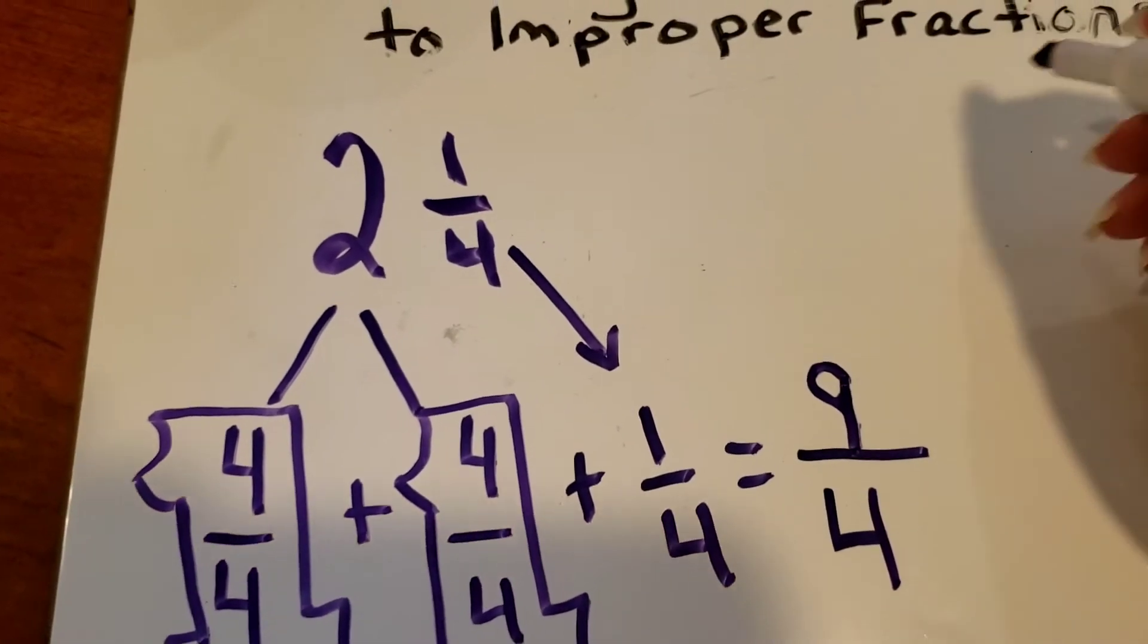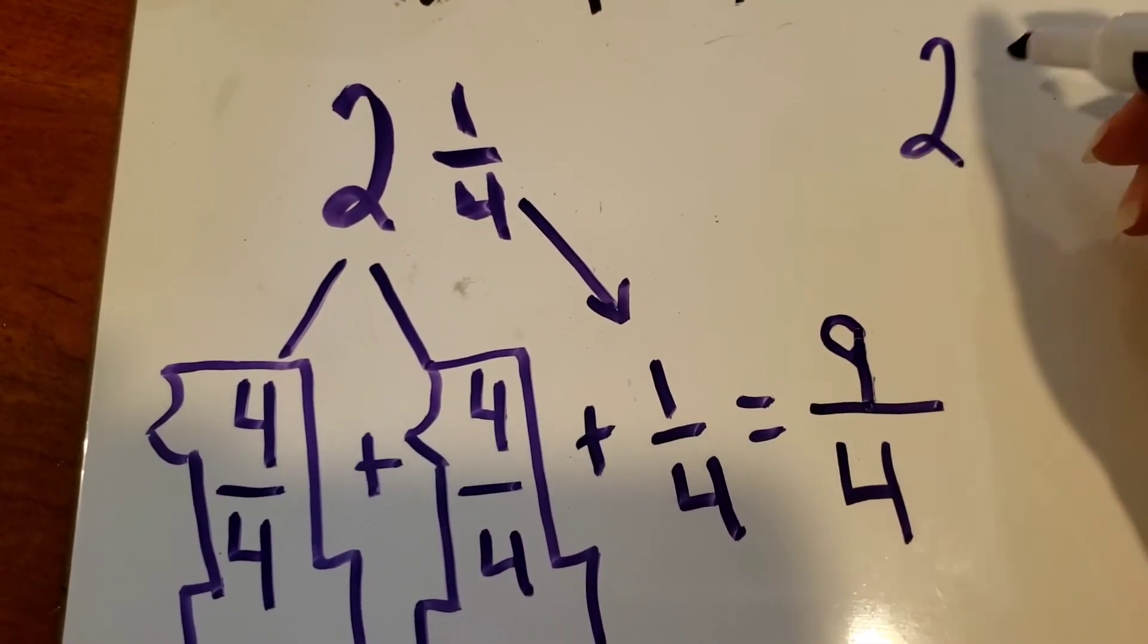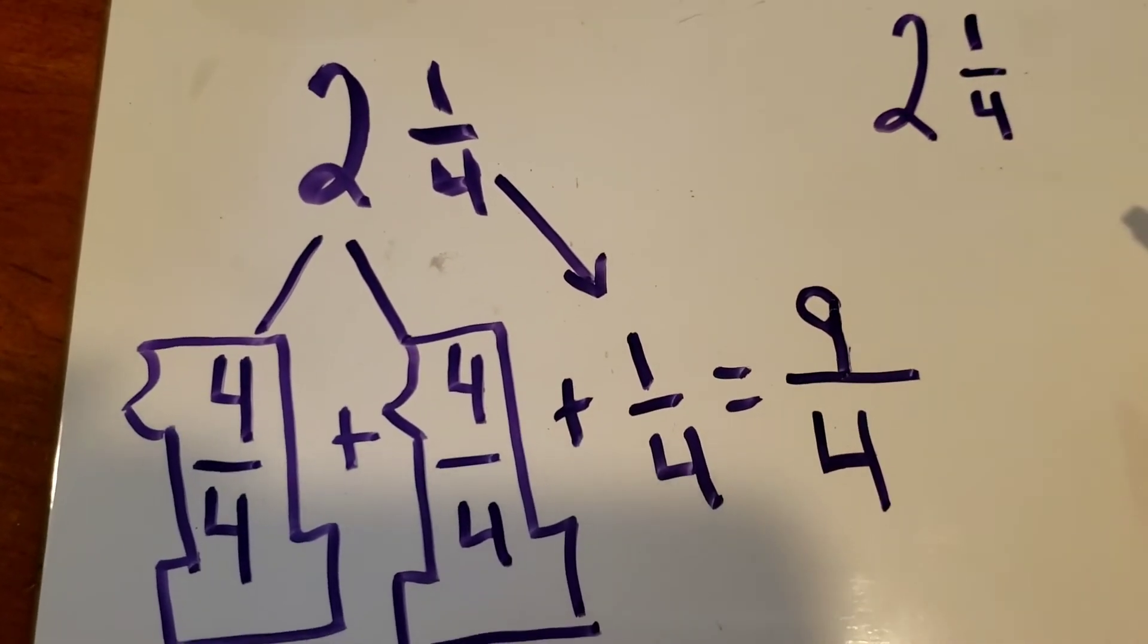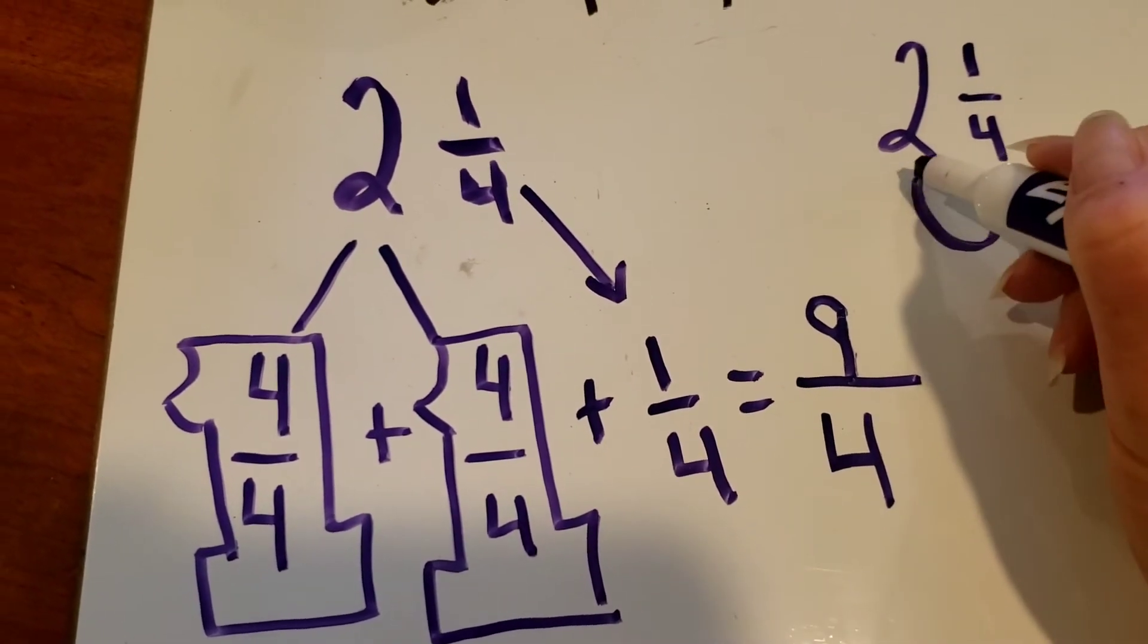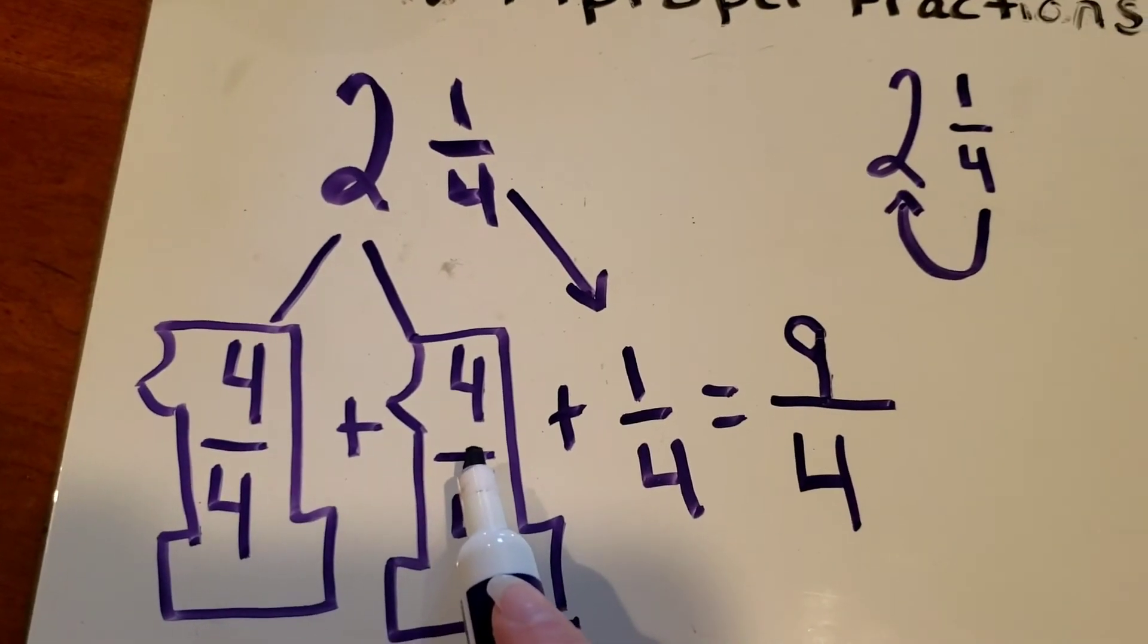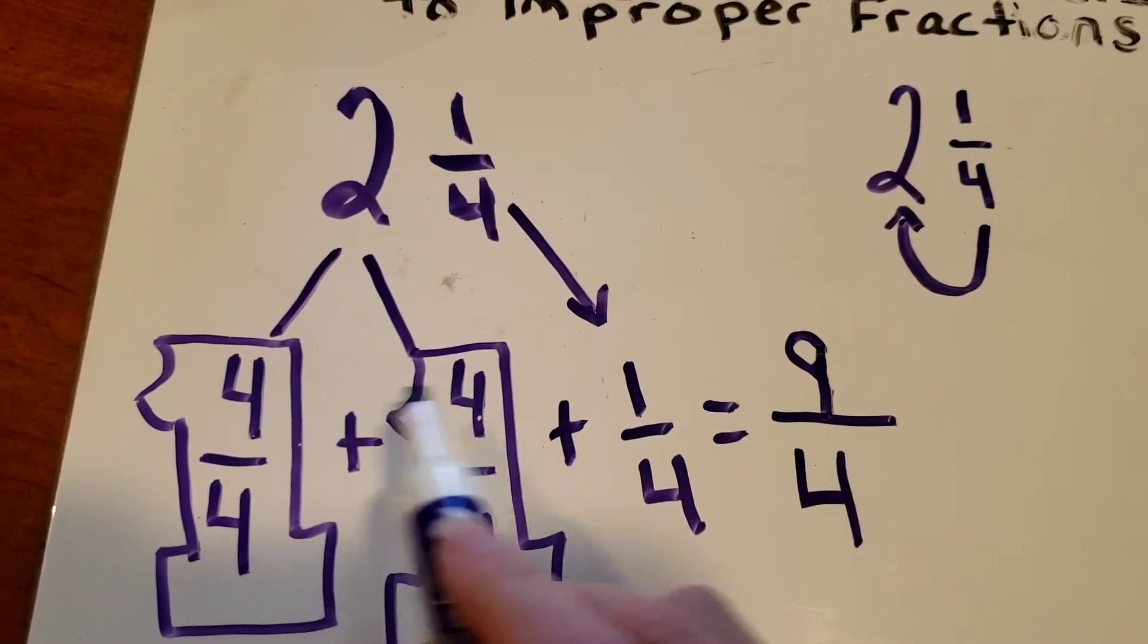One other way to do the same problem is we're going to take the same numbers, two and one fourth. And because I know when I broke my whole number two up into two fractions equal to one, I had two fours in my numerator.